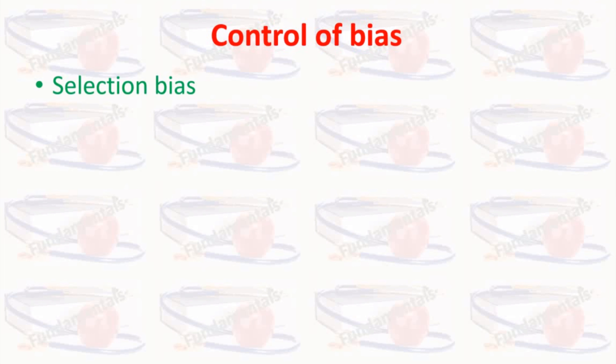Control of bias is mostly done at the design phase of the study. For control of selection bias, direct choice of study population is important and randomization can control selection bias, so we focus on sampling procedures and sample selection. For control of information bias, direct training of interviewers and use of clearly written protocols ensuring uniform methodology of obtaining data, use of standardized tested instruments for data collection, and utilizing uniform sources of data on all predictive methods are important.